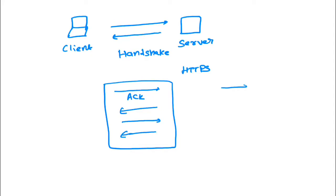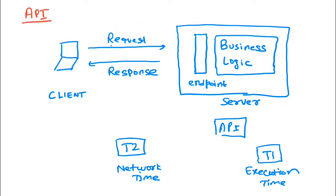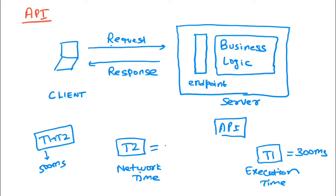If the client is sending multiple requests — request 1, request 2, request 3 — for every request the client gets a response back, and each time a request is sent this handshaking process happens. This process typically takes 150 to 200 milliseconds. So if the overall client response time is 500 milliseconds, with t1 at 300ms and t2 at 200ms, almost 50% of the time is being taken by the network handshake.